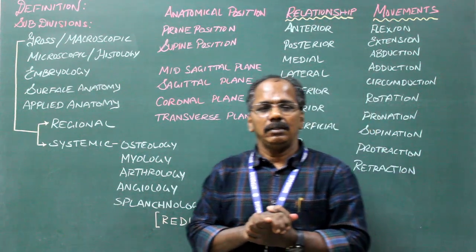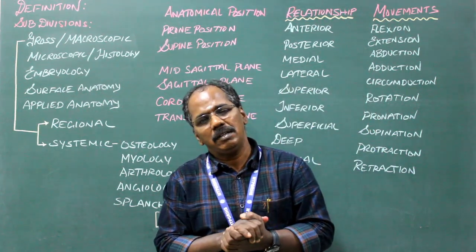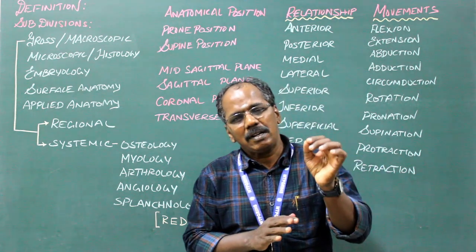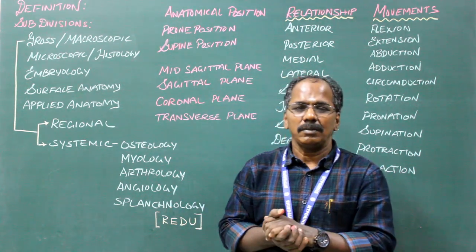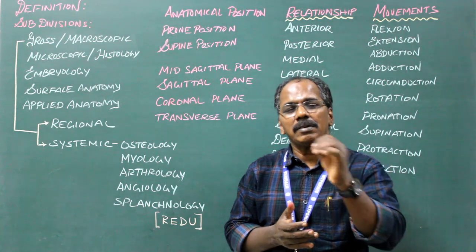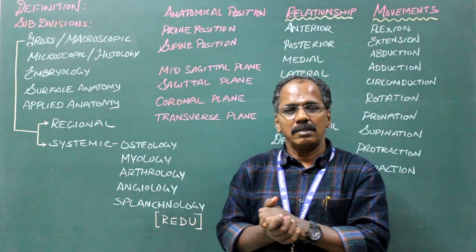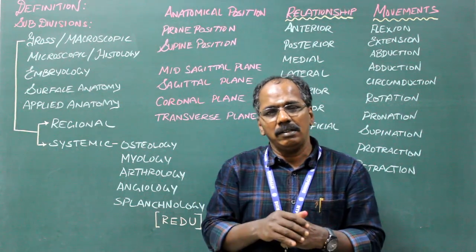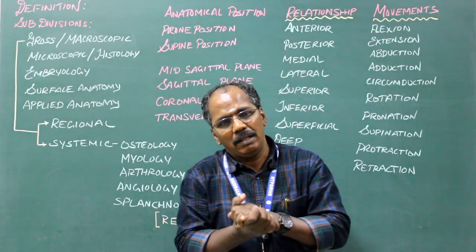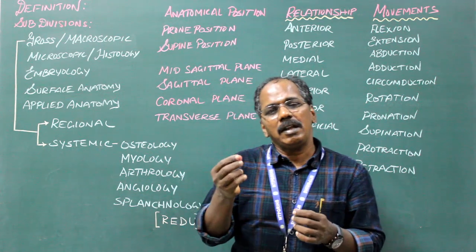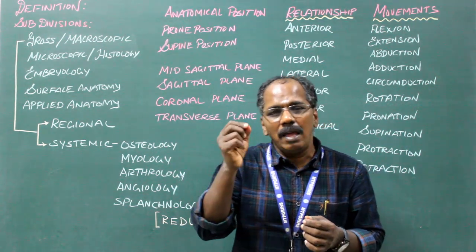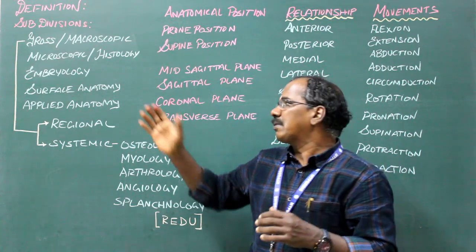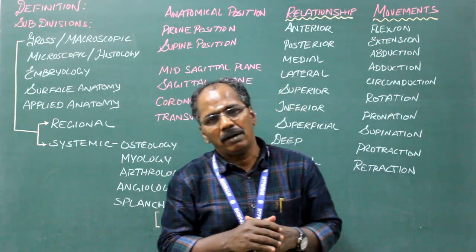Microscopic anatomy or histology. Histology is the study of tissues with the aid of a microscope. That means if you want to study the structure of liver or the structure of skin, you cannot study it with the naked eye. So this is done with the aid of a microscope. It is known as microscopic anatomy or histology.